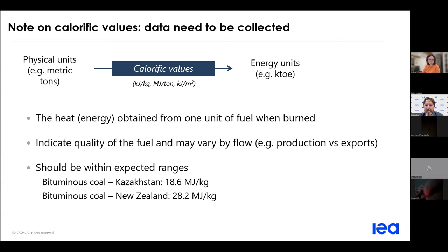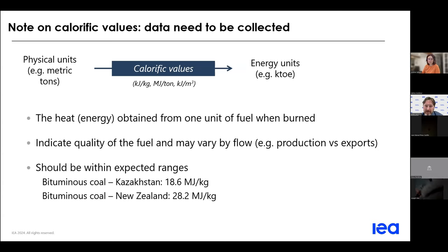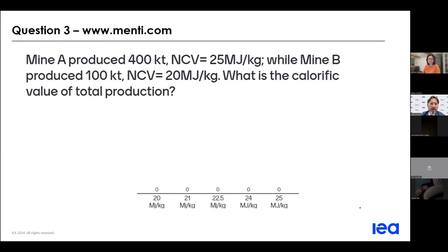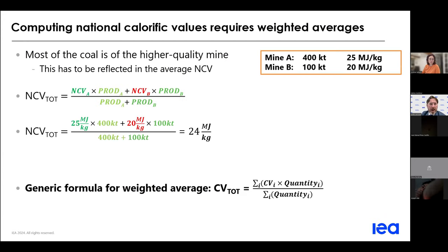在热值方面，能源平衡是按照热值来计算的，热值也就是从物理单位进入到能源单位的一个转换。不同的燃料热值不尽相同，热值也有可能在同样的产品当中略有差异，比如新西兰的一个燃料可能比哈萨克斯坦的同一个燃料的热值更高一些。用新西兰的热值去替代哈萨克斯坦的热值可能会扭曲能源效率的情况，所以在计算热值时需要考虑到本地的热值情况。